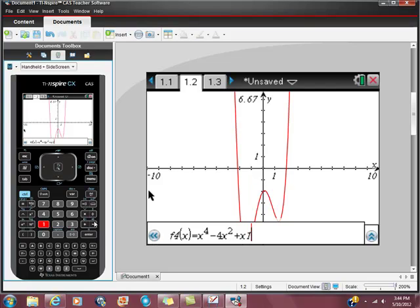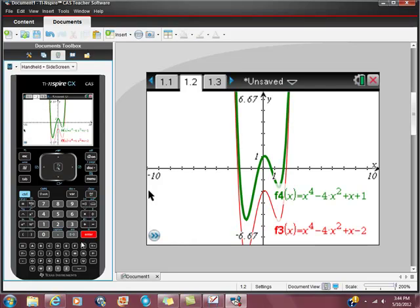Plus 1. All right. So how many distinct real roots does this one have? This one has 1, 2, 3, 4.